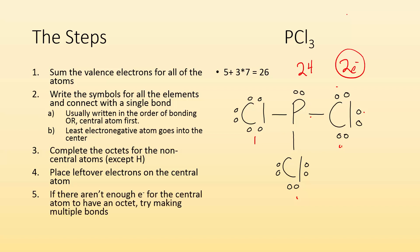If there aren't enough electrons for the central atom to have an octet, try making a multiple bond. Right now that central atom phosphorus does have an octet. It's got two that it's keeping to itself and then it's sharing two, four, six others. So it has the octet. So this is my Lewis structure for PCl3, piece of cake.